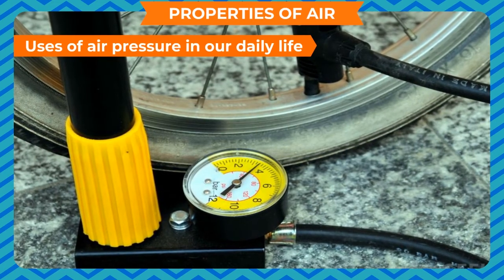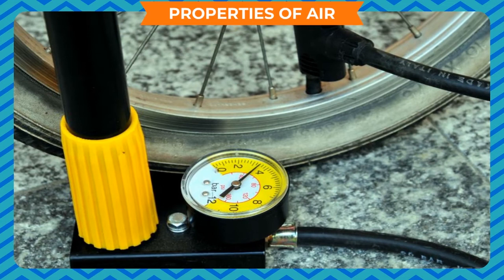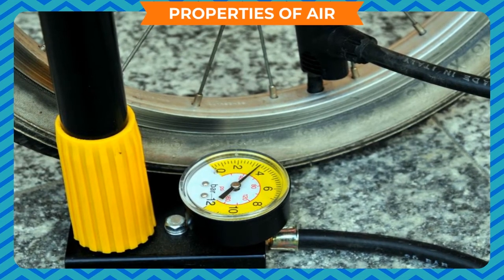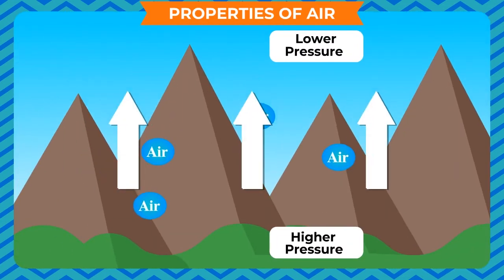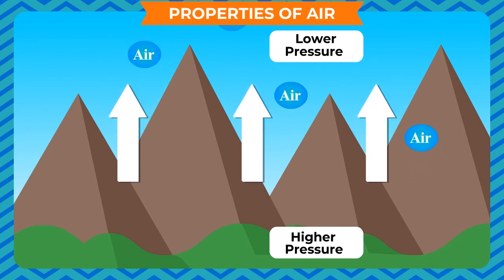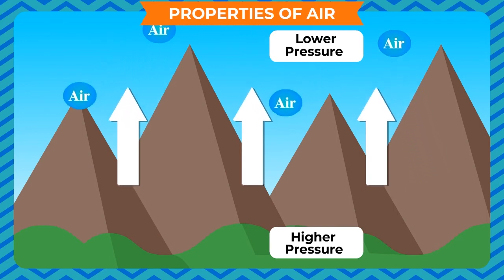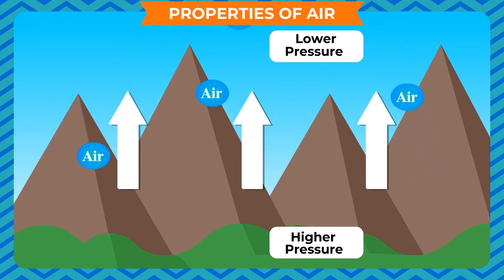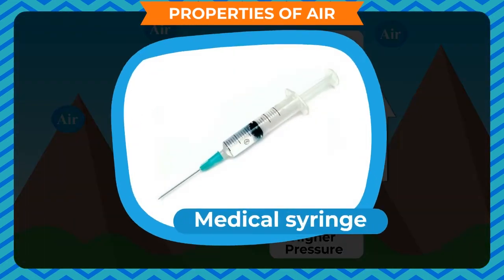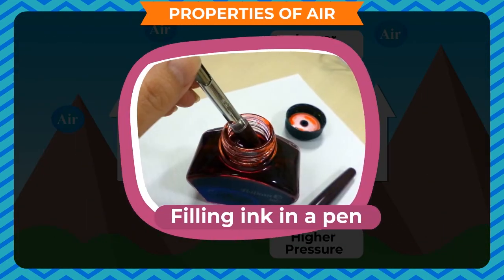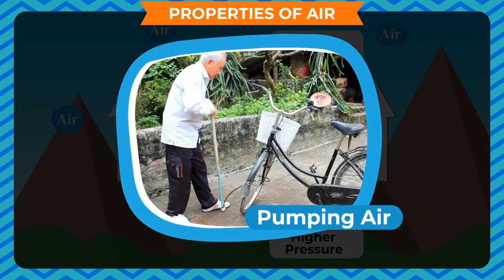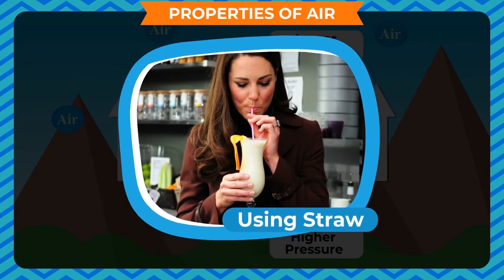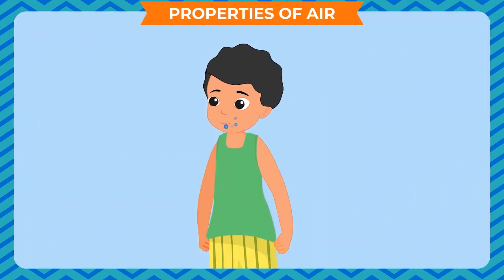Uses of air pressure in daily life: we know that air has pressure. When we go up high in the atmosphere, the air pressure decreases. Air pressure is used in many ways: in medical syringes, for filling ink in a pen, pumping air into a tube, and drinking cold drinks using a straw. It also works in our body — breathing controls the balance of air pressure inside our body.